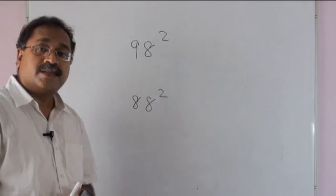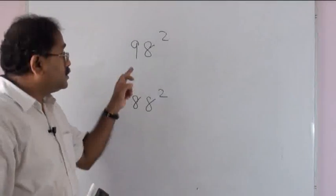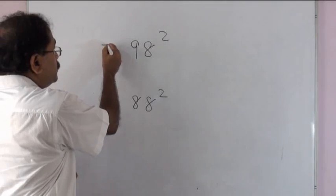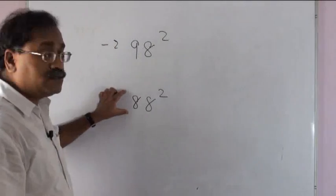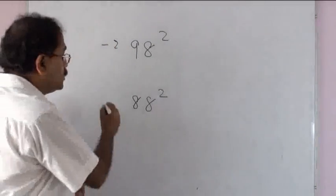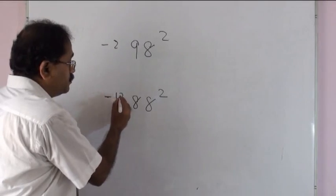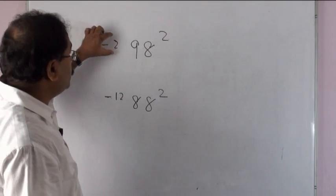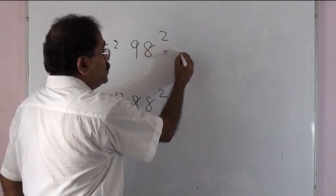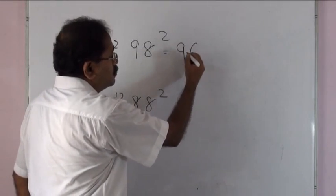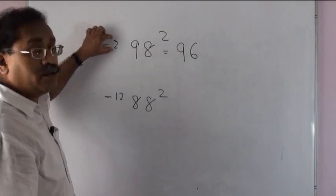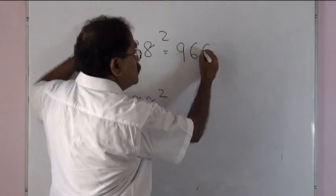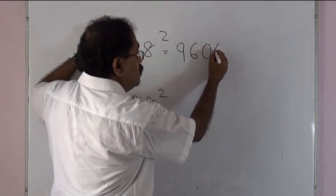Observe these two numbers: 98 squared, which is 2 less than 100, and 88 squared, which is 12 less than 100. For 98: 98 minus 2 is 96, followed by 2 squared, which is a single digit number, so we place 04. So 98 squared equals 9604.